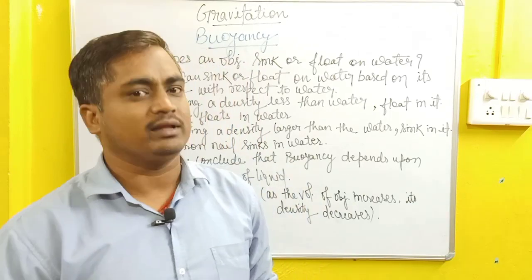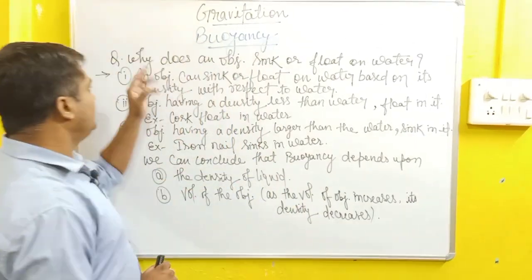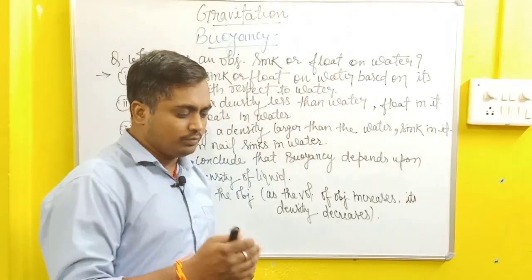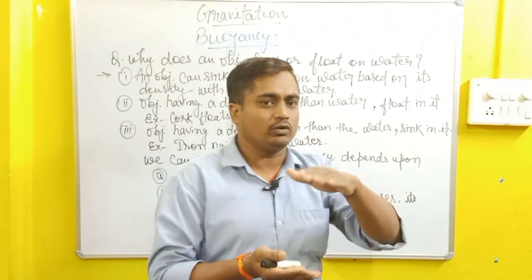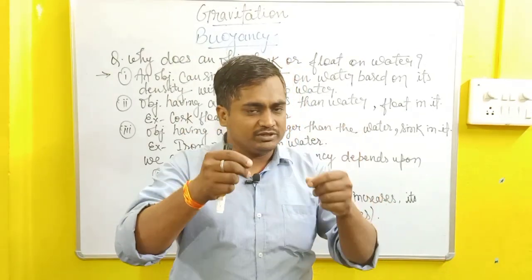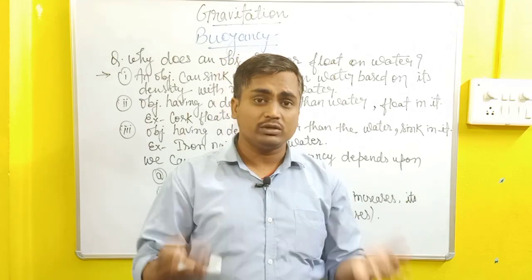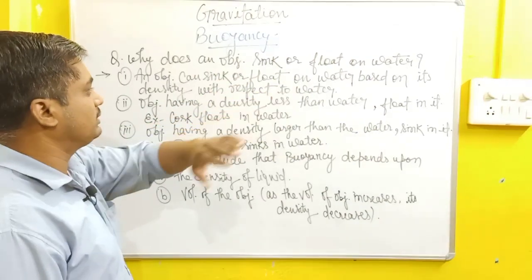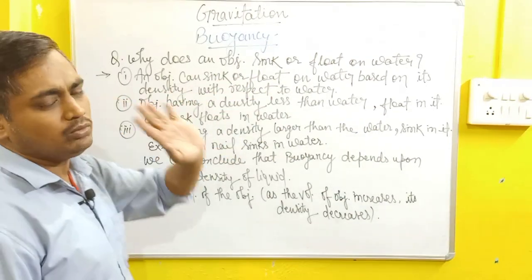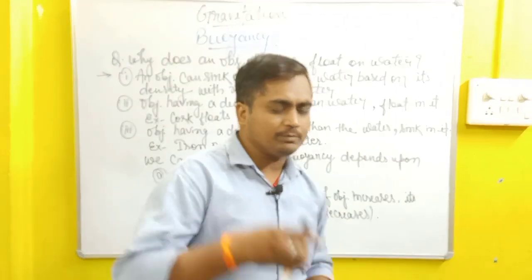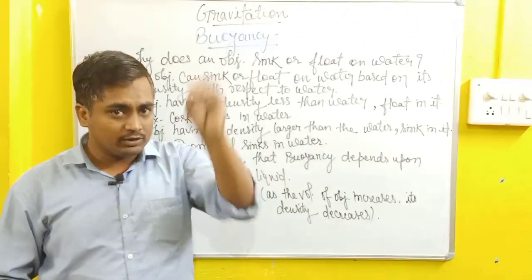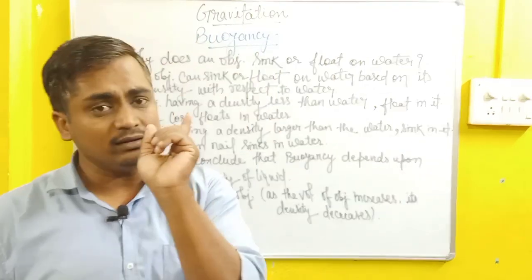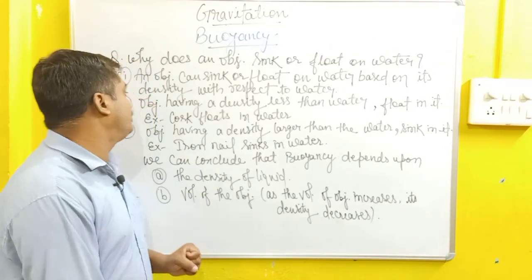From this, some questions arise students. One question is why does an object sink or float on water? An object is floating on water surface, why? Or an object sank in water, why? The answer is an object can sink or float on water based on its density with respect to water. Any object floats or sinks in water, it totally depends on the density of water and the density of that object.